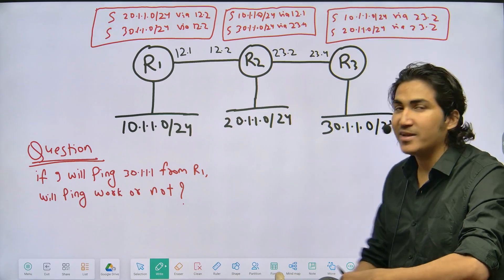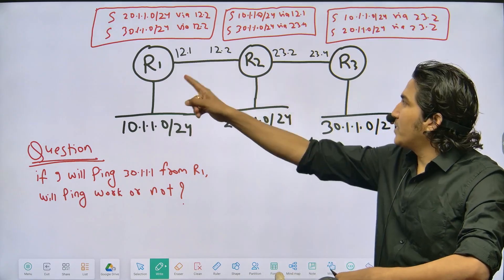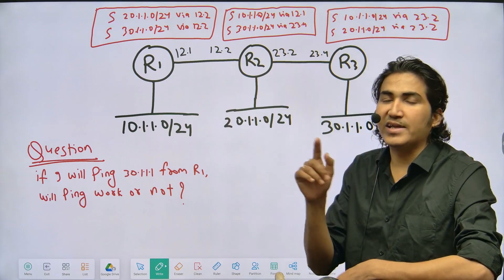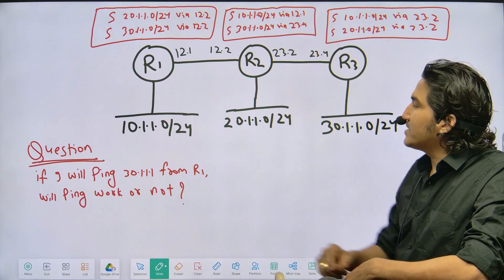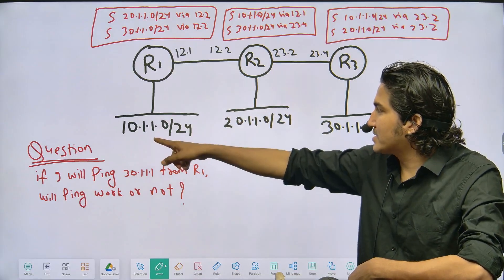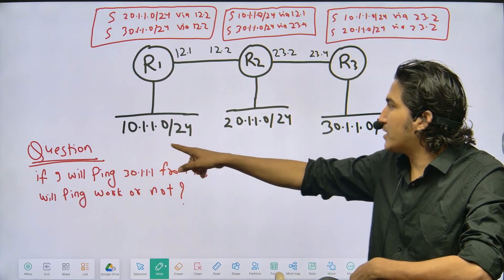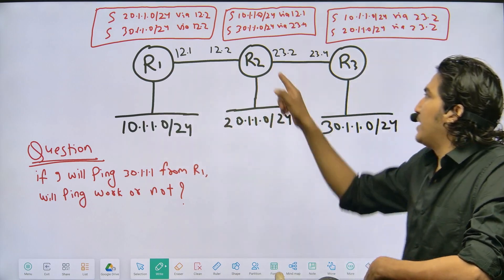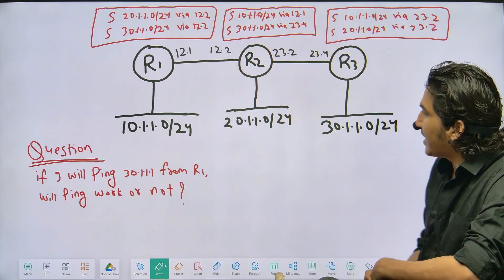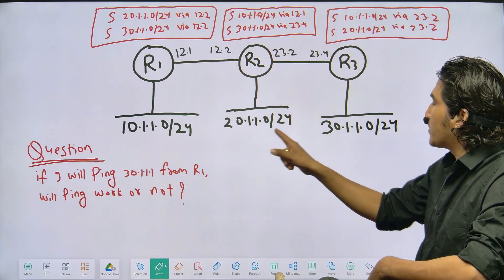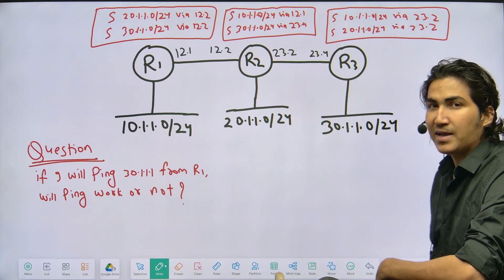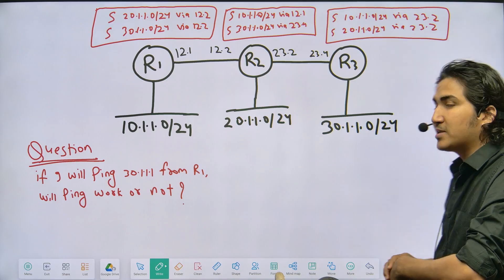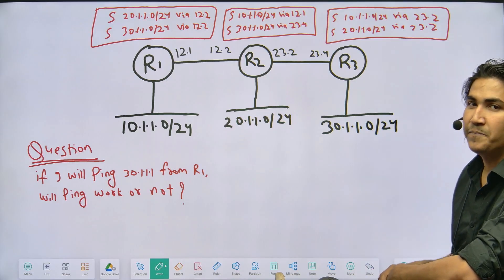In this scenario there are three routers: Router 1, Router 2, and Router 3, and there are three LANs. LAN 1 is connected with Router 1 running subnet 10.1.1.0/24. LAN 2 is connected to Router 2 running subnet 20.1.1.0/24, and LAN 3 is connected to Router 3 running subnet 40.1.1.0/24.